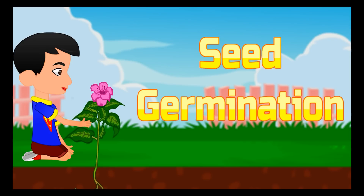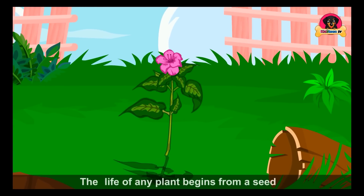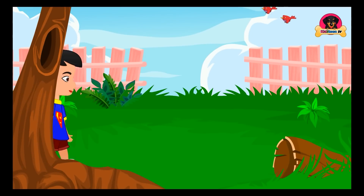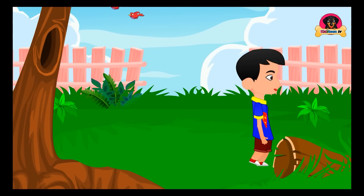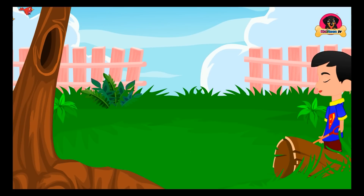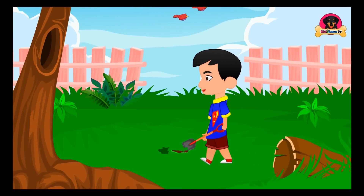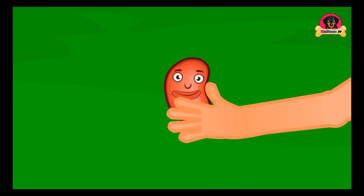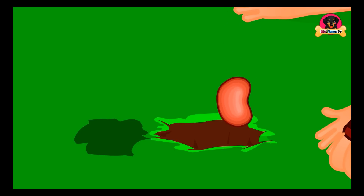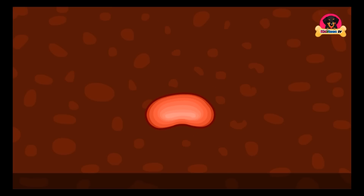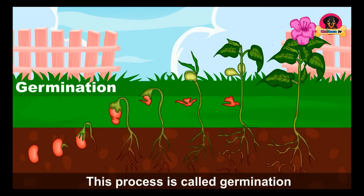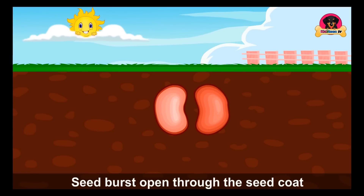Seed germination — the life of any plant begins from a seed. When a seed is sown into moist soil, it starts to grow. This process is called germination, where the seed bursts open through the seed coat in search of sunlight for photosynthesis.